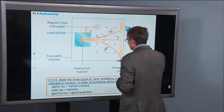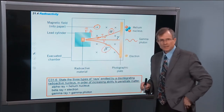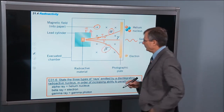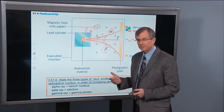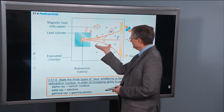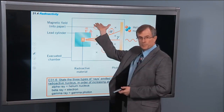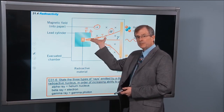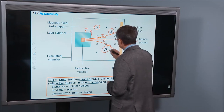The beta particles, or beta rays, are deflected in the opposite direction, and we find they must therefore be negatively charged. Velocity, magnetic field — a positively charged particle would experience a force in this direction, a negative one would be in the opposite direction, so these must be negative.